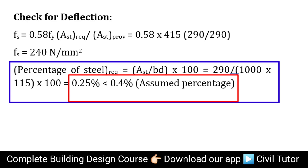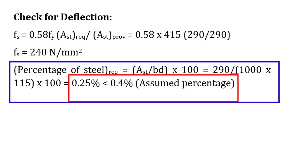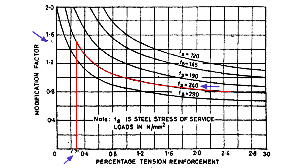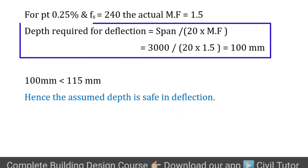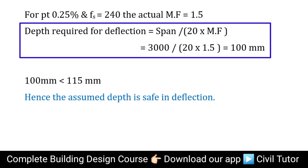However, a detailed check as per the code is worked out to substantiate the above statement. For 0.25% steel and Fs = 240, the actual modification factor is 1.5 as per the graph on page 38 of IS 456-2000. The depth required for deflection = span / (basic value × modification factor). The basic value for a simply supported slab is 20. On substituting, the depth required for deflection = 100 mm, which is less than the calculated effective depth of 115 mm. Hence, the assumed depth of the slab is safe in deflection.